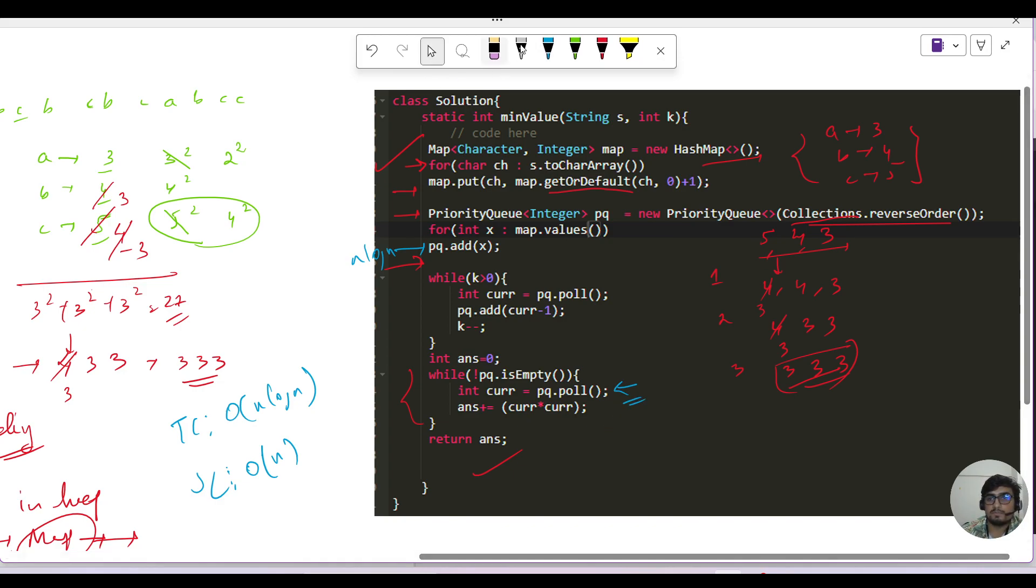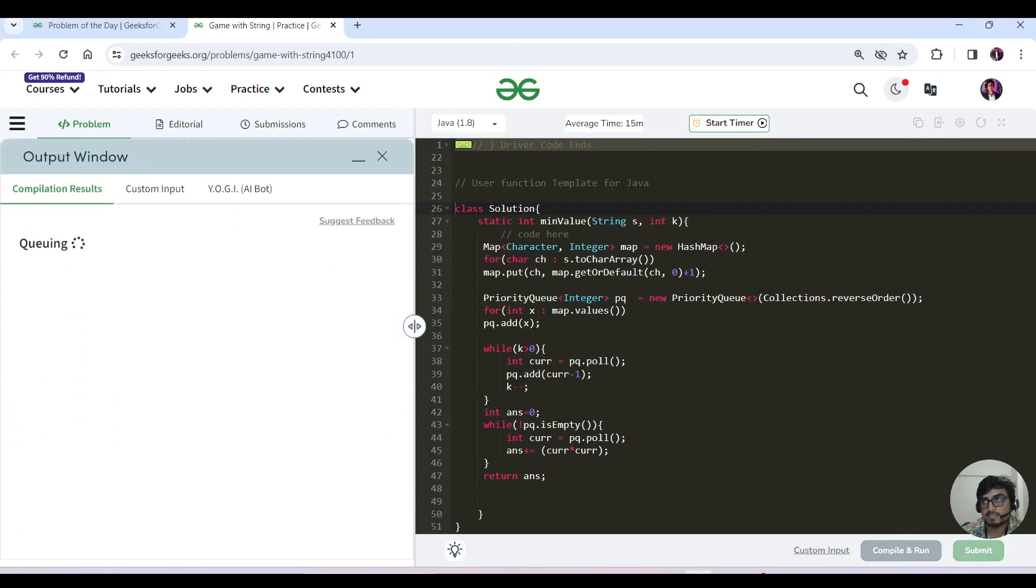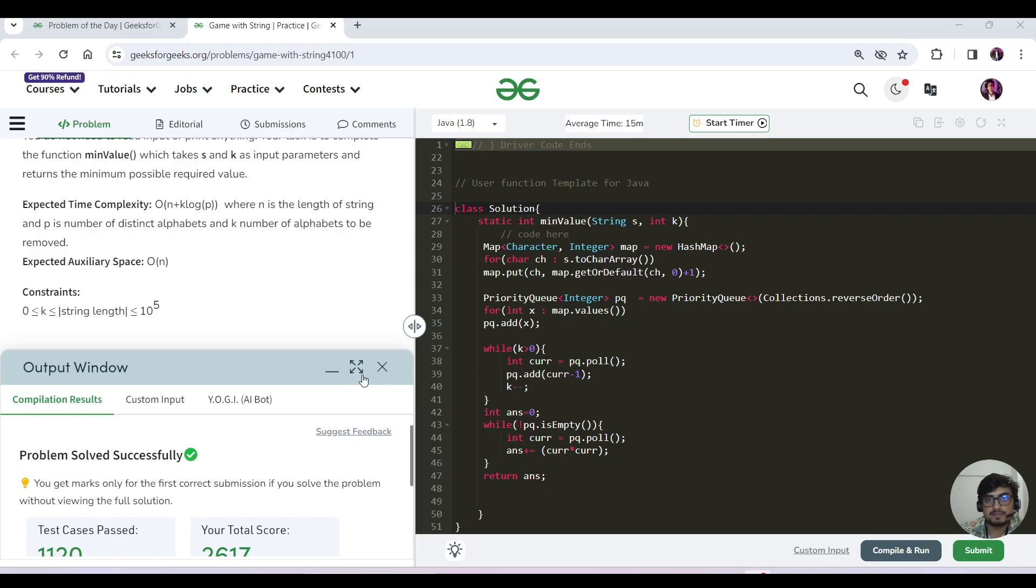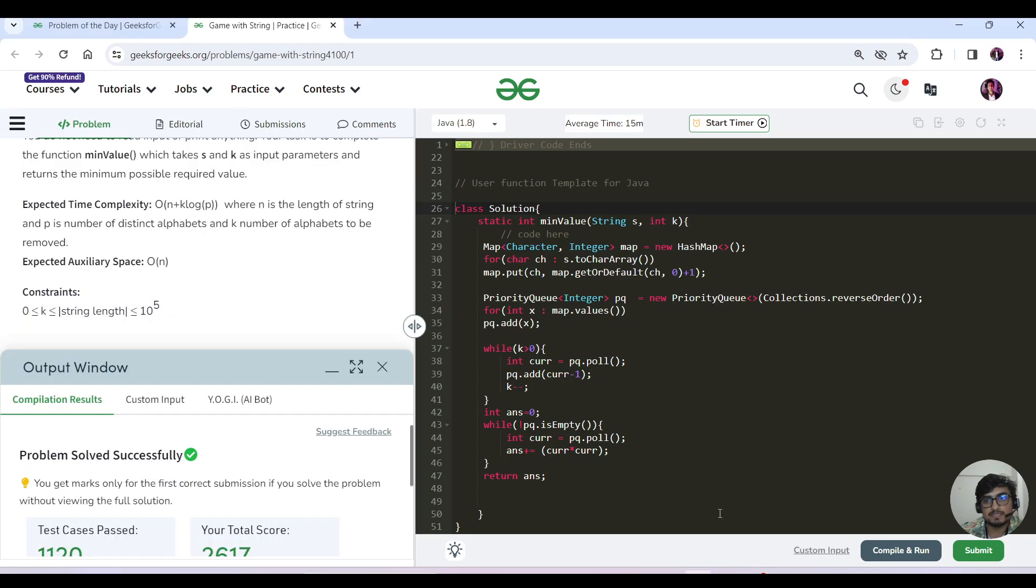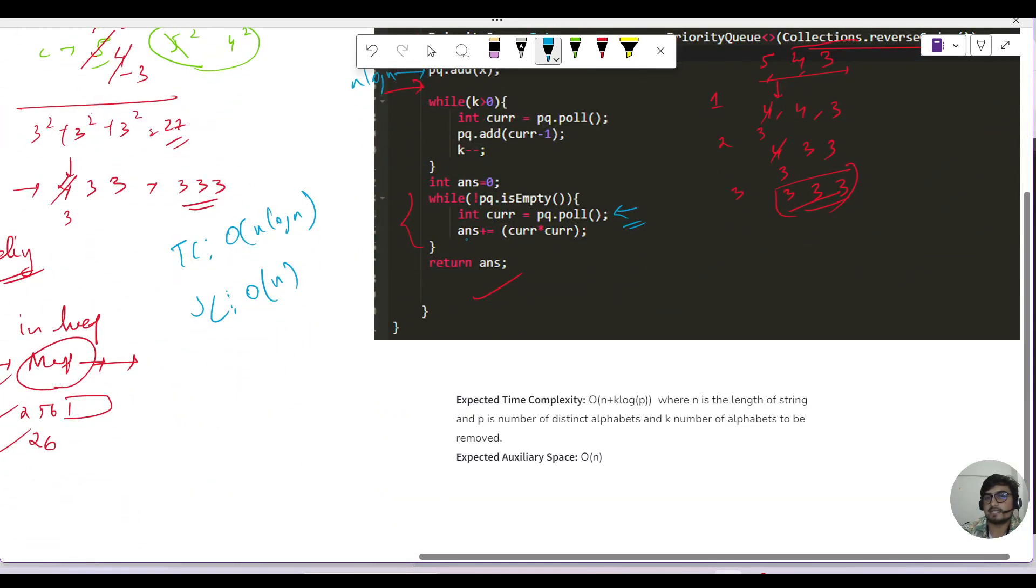Okay, so I hope everything is clear here. And let us see the code in the running state. Let us hit the submit button. So here it is. All the test cases have passed successfully. Here the expected time complexity is n plus k log p. They have more specific information. Let us understand how n plus k log p is written. Where n is the length of the string and p is the number of distinct alphabets. And k is the number of alphabets to be removed.